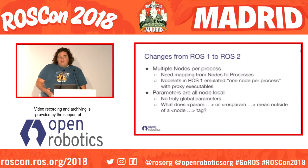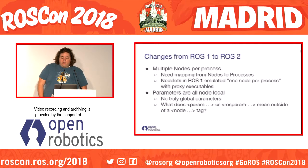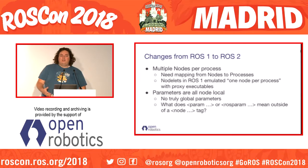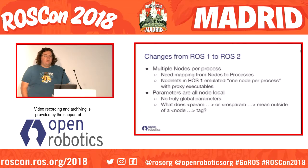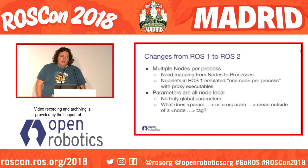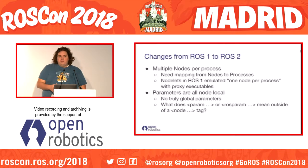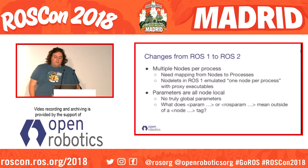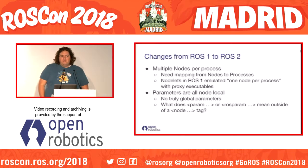There are some things we have to change about launch in ROS2 because of the way that ROS2 works. A lot of things in ROS launch and ROS1 assume a single node per process, which is no longer the case in ROS2. So we have to make some changes accordingly. ROS launch needs to know the mapping between nodes and processes.